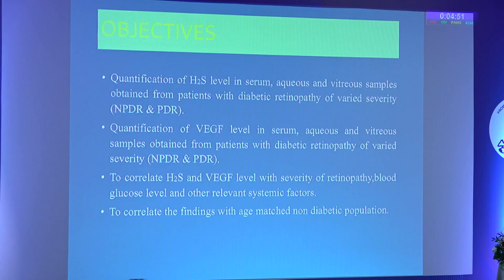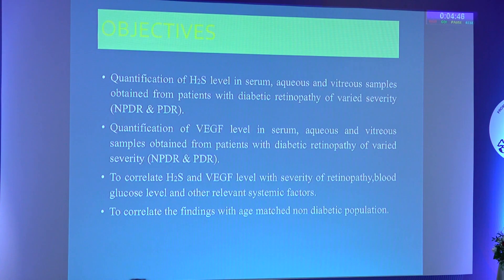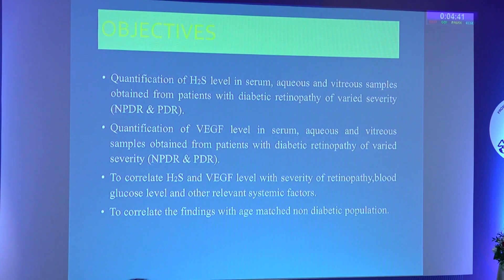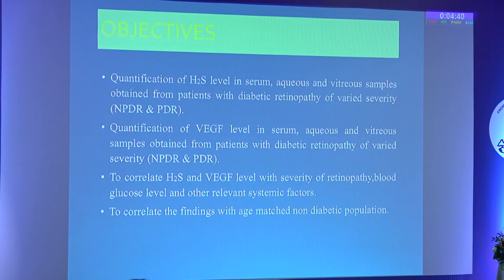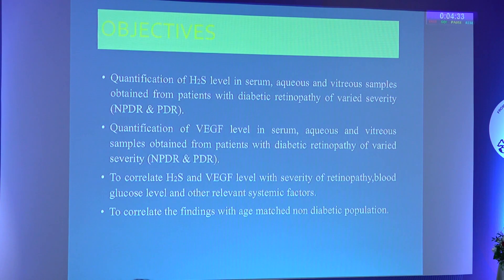The objective of our study is to quantify hydrogen sulfide levels in serum, aqueous, and vitreous along with vascular endothelial growth factor in different severities of diabetic retinopathy — mild, moderate, and severe NPDR, and PDR. We also aimed to correlate findings with an age-matched normal population and with systemic factors like blood sugar and other relevant systemic parameters.